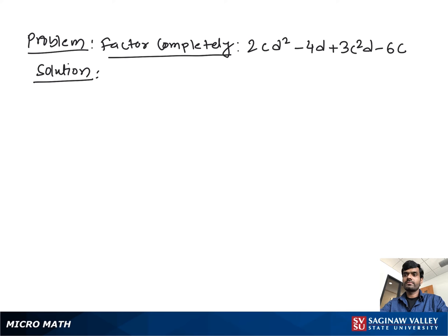Factor completely: 2cd square minus 4d plus 3c square d minus 6c. Now as you see, there is no common factor shared and there are no like terms you can add or subtract.